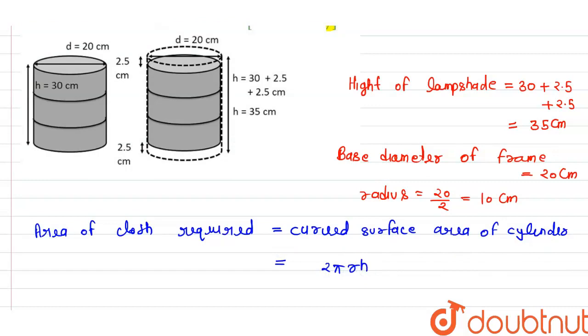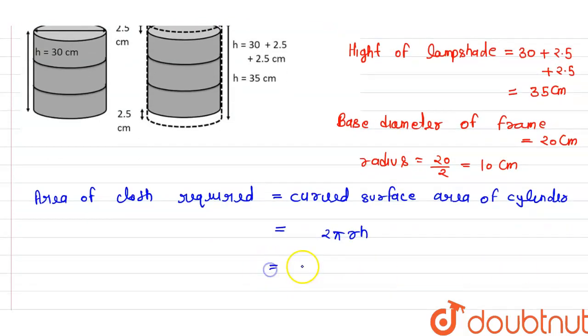We know the curved surface area formula of a cylinder is 2πrh. Here we substitute: 2 × π (which is 22/7) × r (which is 10) × h (which is 35).